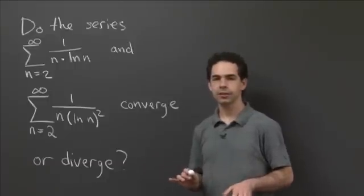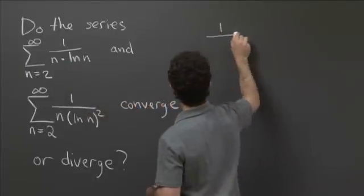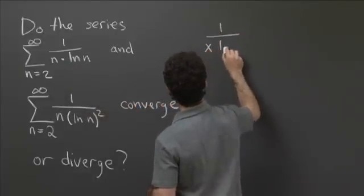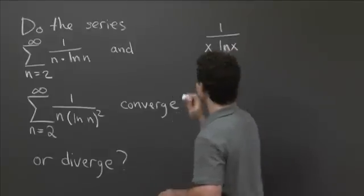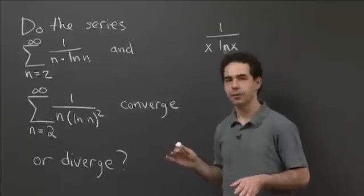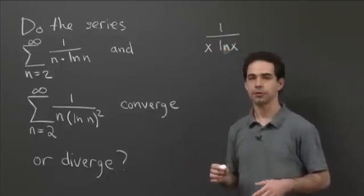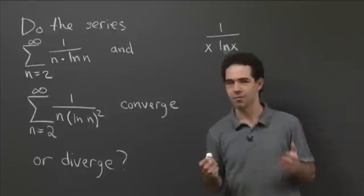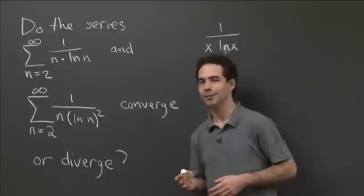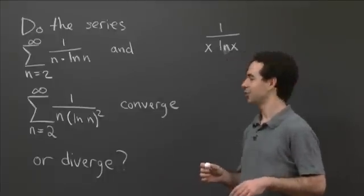Well, you can look at these integrands, and they don't really look a lot like anything you've seen before. But the associated functions, right, so 1 over x log x, this continuous function looks sort of like some things that we've integrated before. So that's one hint for the integral test. Another hint is you just don't know very many tests right now, so it's kind of a small selection of options.